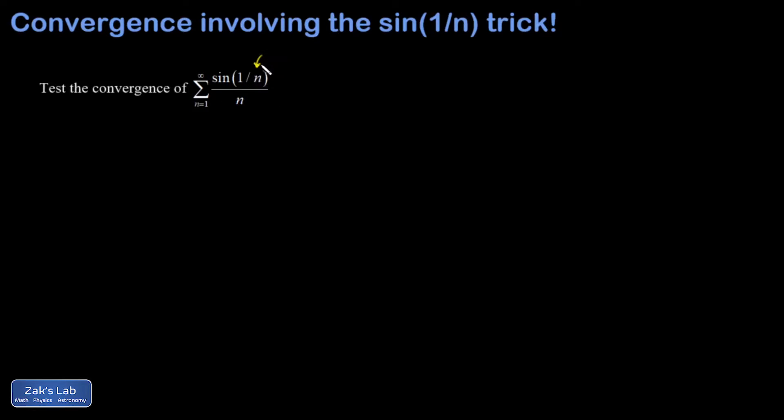the 1 over n in the parentheses here gets close to 0. So that's forcing the numerator to get close to 0 instead of staying at 1. So I'm hopeful that this thing converges.